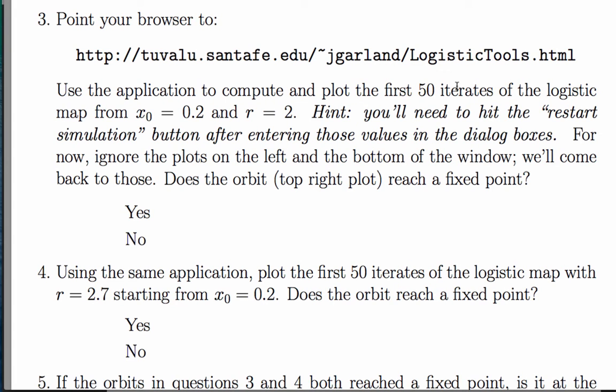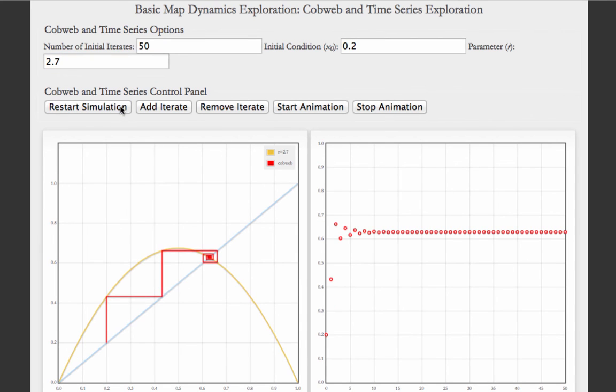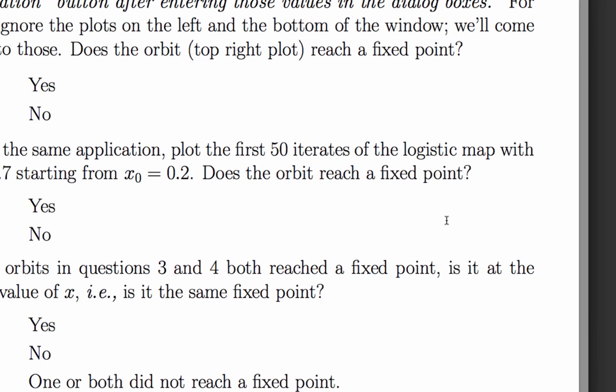In question 4, we're supposed to raise r from 2, where it was in question 3, up to 2.7, and repeat the same experiment. 50 iterates from x0 equals 0.2. Let's try that. The shape of the graph is a little bit different, but the orbits do converge to a fixed point. So the answer is again, yes.